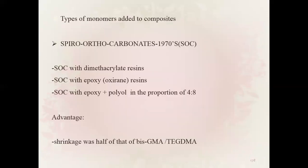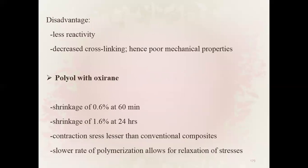Types of monomers added to composites to reduce shrinkage: Spiro orthocarbonates with dimethacrylate resin or with epoxy resins, or with epoxy plus polyol in the proportion of 4:8. Advantage: shrinkage was half that of Bis-GMA or TEGDMA. Disadvantage: less reactivity, decreased cross-linking, hence poor mechanical properties.